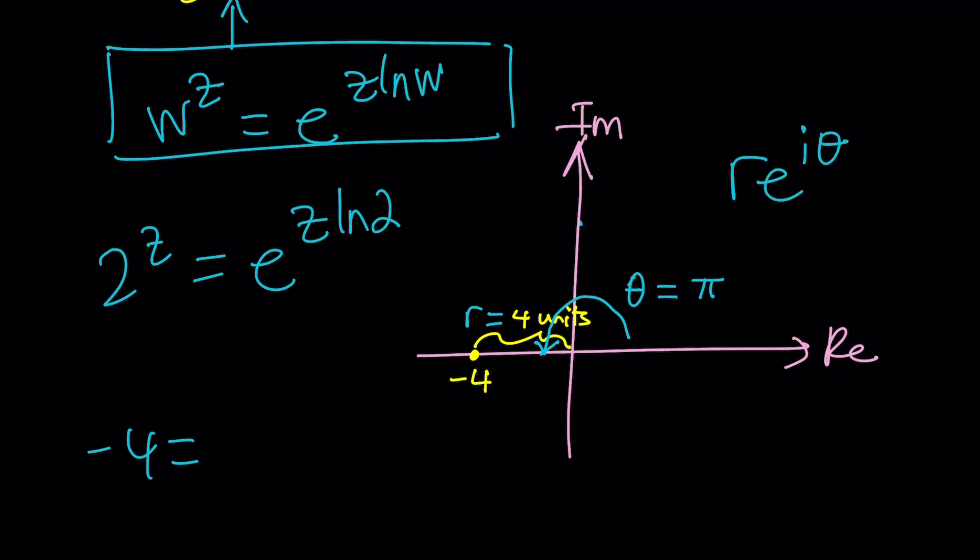R e to the i theta where theta is the argument and r is the modulus. Modulus is 4 and the angle is pi. But instead of writing pi because you are allowed to add multiples of 2 pi to this and imagine you have pi plus 2 pi. That gives you 3 pi. That is a different value but it brings you to the exact same point. So in the real world it's the same number. So we're going to write instead of pi we're just going to write pi plus 2 pi n because of the period of this exponential. Okay so far so good.